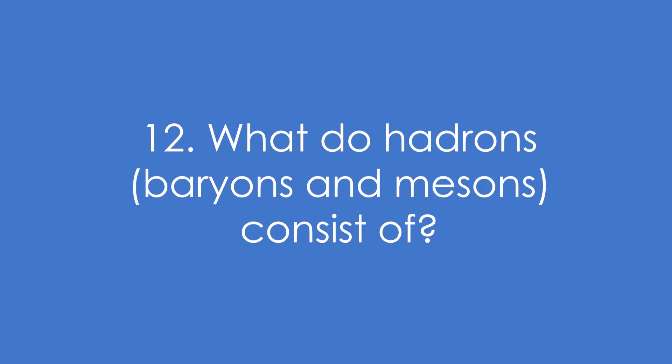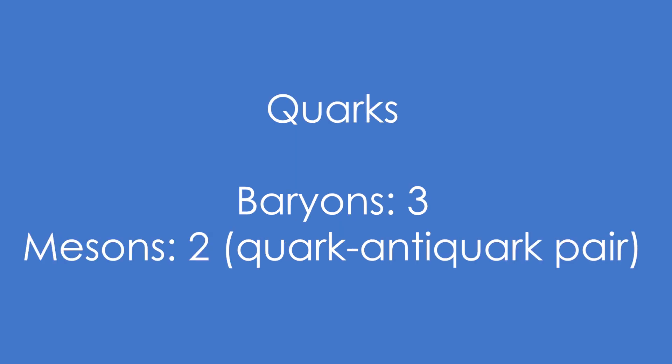12. What are hadrons, that is baryons and mesons, consist of? They're made up of quarks. Baryons have 3, mesons have 2. Always a quark-anti-quark pair. They don't have to be the same flavour though.